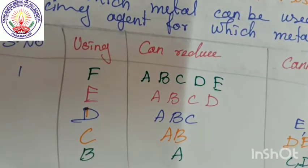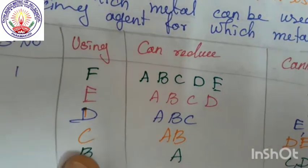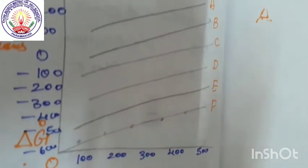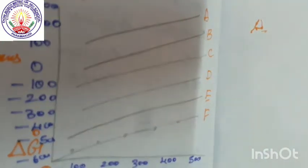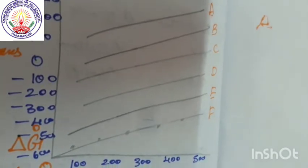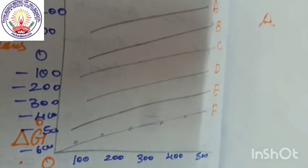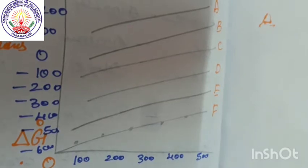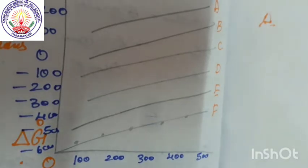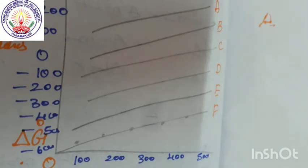That is, looking at the graphical representation — at temperature 100, delta G is here; at 200, delta G value is here; at 300, it keeps increasing. So this represents one metal oxide line. We label the lines A, B, C, D, E, F and so on, and from these we can determine which metal can be used for which reducing agent.